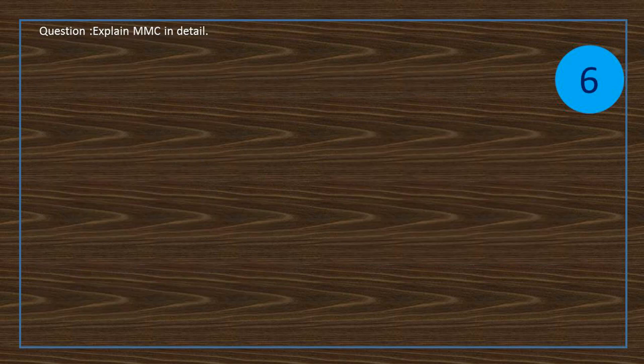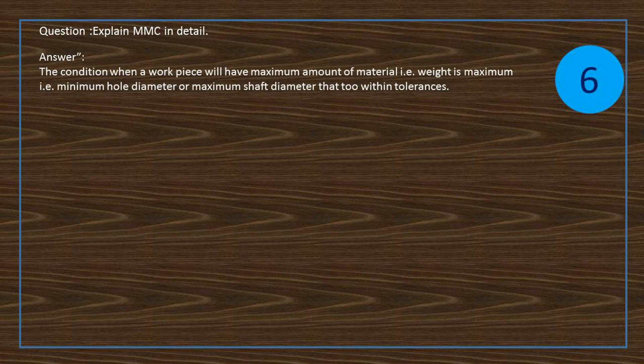Question: Explain MMC in detail. Answer: The condition when a workpiece will have maximum amount of material, that is the weight is maximum - minimum hole diameter or maximum shaft diameter, that too within tolerances.